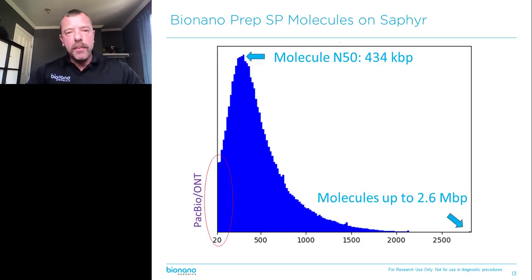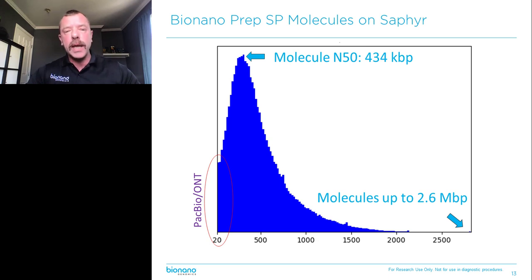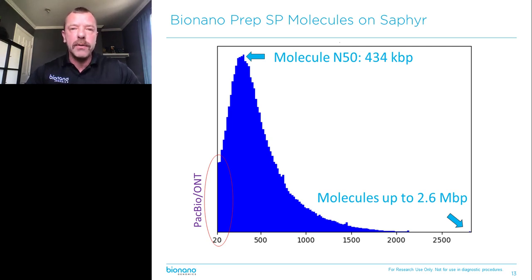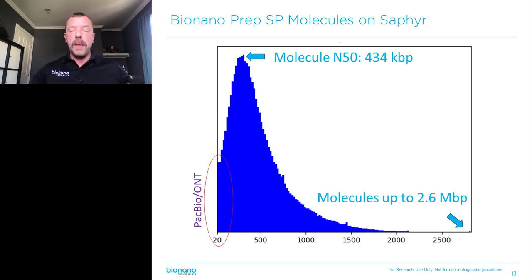The molecules we collect with this method are extremely long. The N50, which is somewhat the weighted average of molecule length, is over 400 KB with a tail that goes all the way to two and a half megabase pairs. In comparison, the typical read length with long read sequencing is orders of magnitude less. And it matters, because these long molecules allow you to span the repetitive areas of the genome.